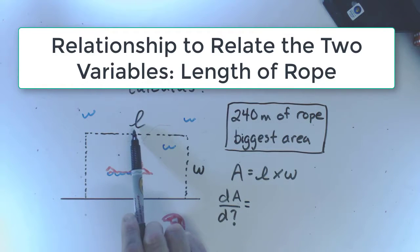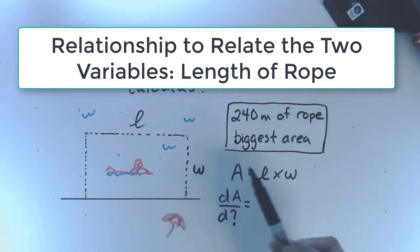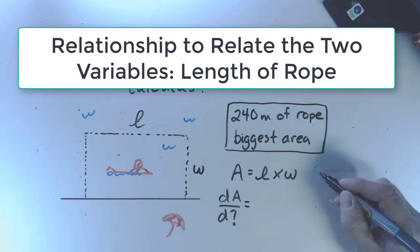As I make my length bigger, my width is getting smaller. And so length and width are actually related, and they're related as follows.